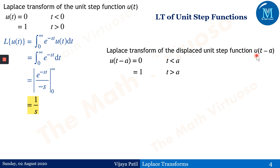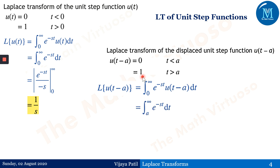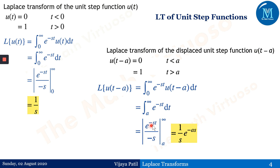Similarly, for the delayed function u(t - a), the Laplace of u(t - a) is the integral from 0 to infinity of e^(-st) · u(t - a) dt. Since u(t - a) equals 1 for t greater than a, the integral runs from a to infinity. Evaluating e^(-st) / (-s) from a to infinity gives e^(-as) / s. If you have any difficulty finding the limit, please refer to sessions 1 and 2 where I derived Laplace transforms of several functions using the definition.